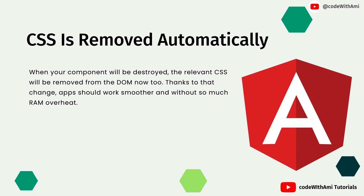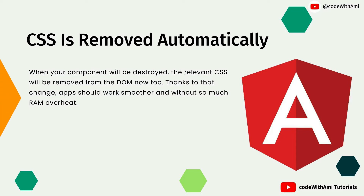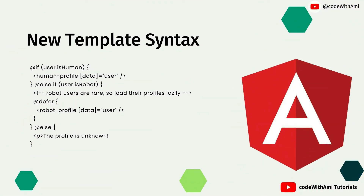When your component is destroyed, the relevant CSS will now also be removed from the DOM. Earlier, whenever a component got destroyed, its CSS used to remain in the DOM. But after the Angular 17 upgrade, whenever a component is destroyed, the relevant CSS will also be removed from the DOM. Thanks to this change, apps should work smoother and with less RAM overhead.